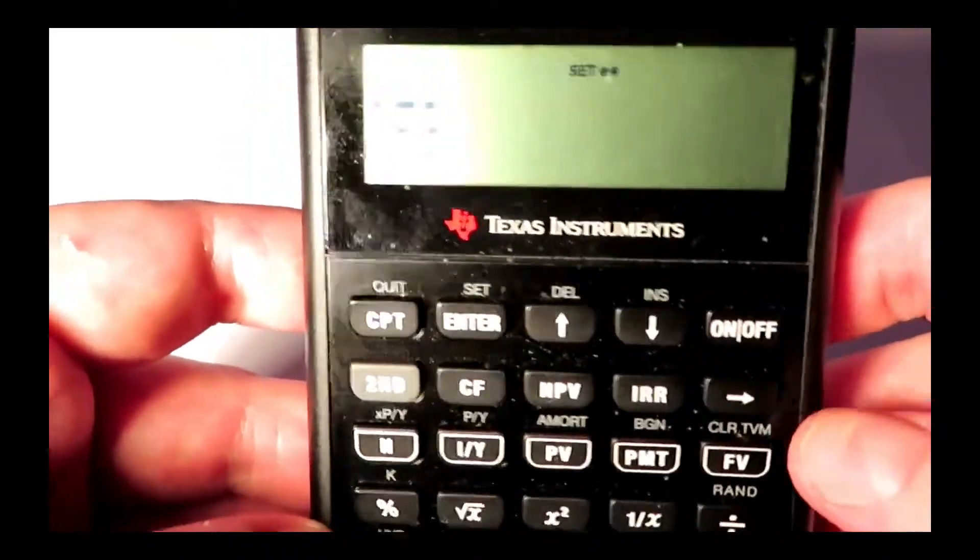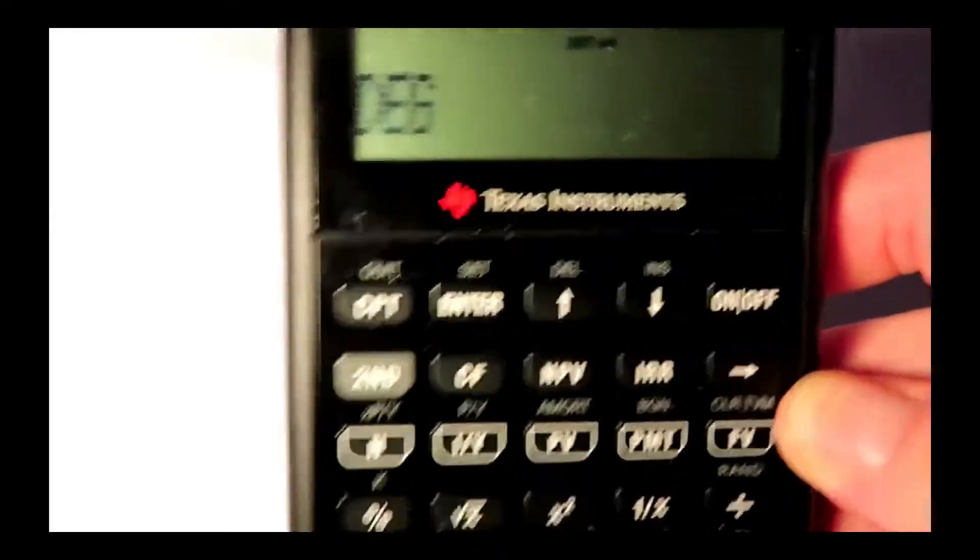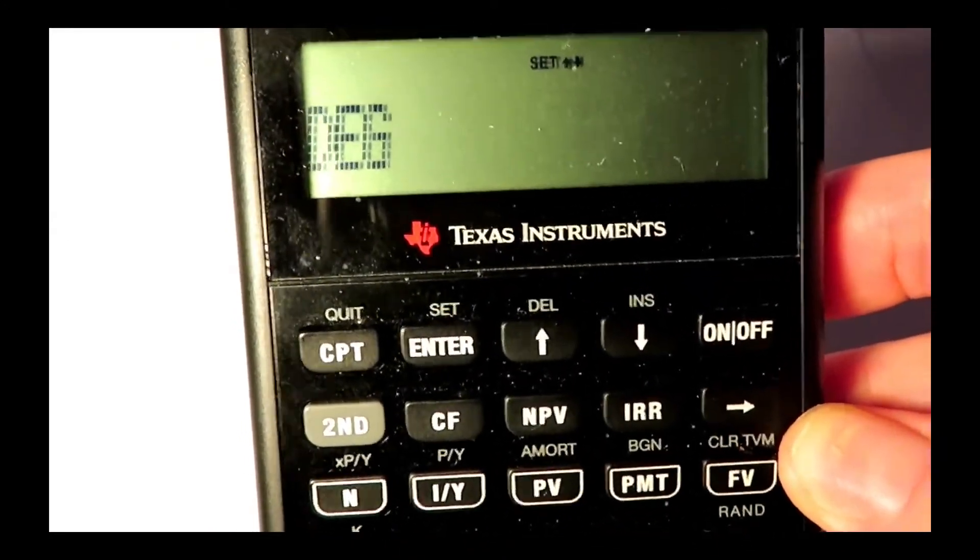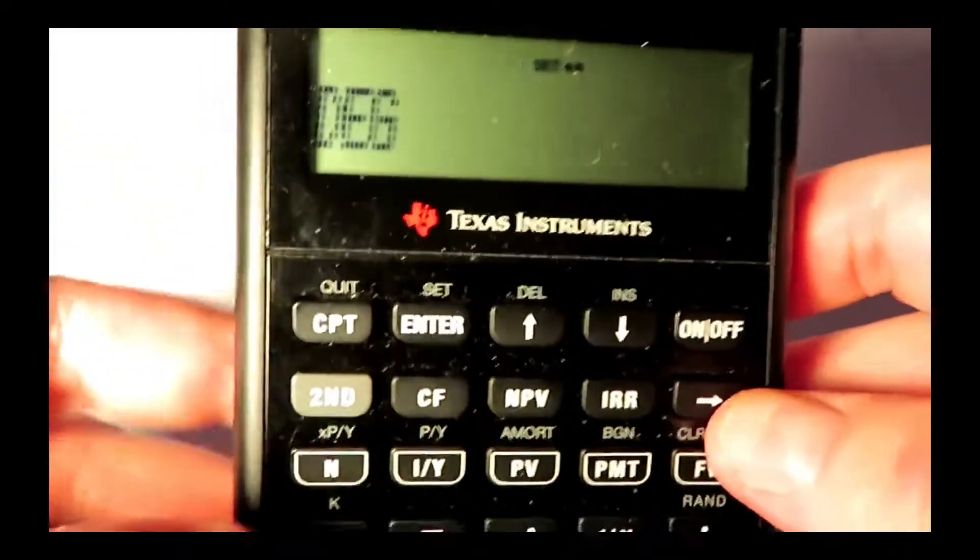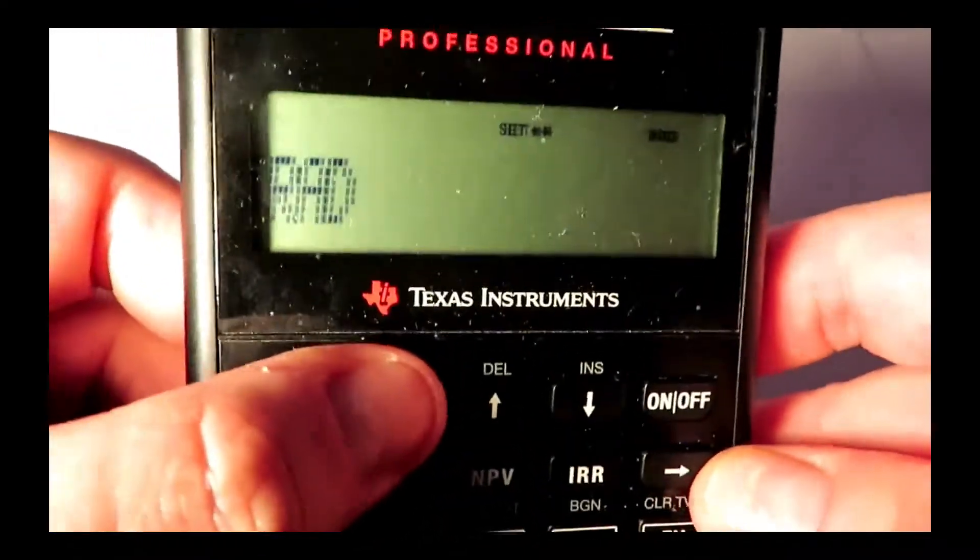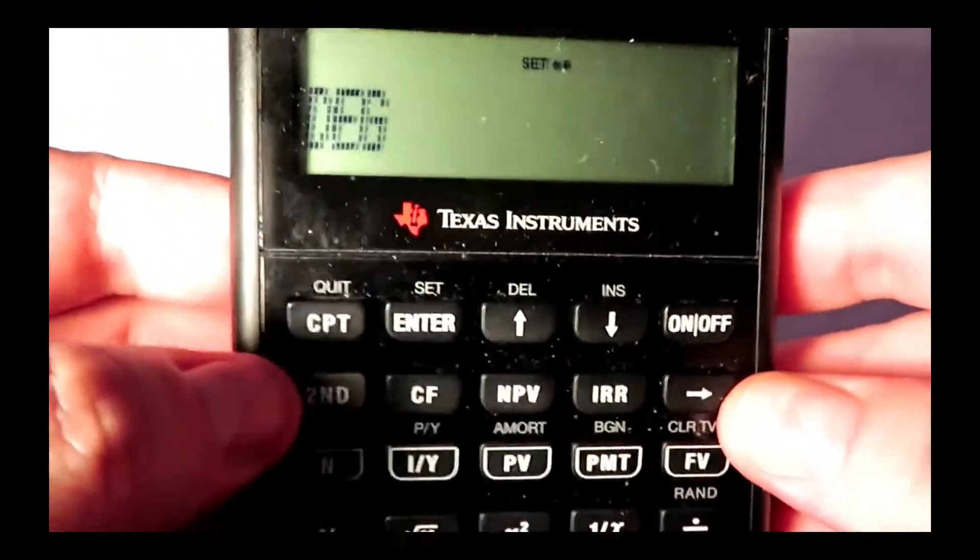So we have DEG, which stands for degrees, and that's where you can change between degrees and radians. I think it's just second and enter. Second and enter will rotate them.